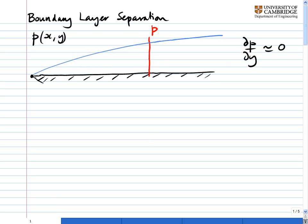So let's think about the velocity profile in the boundary layer. Up in the free stream we have the free stream velocity. Then in the boundary layer — the bits that have been affected by the presence of the boundary — we see that velocity tail down to zero. So the velocity vectors will look like that.